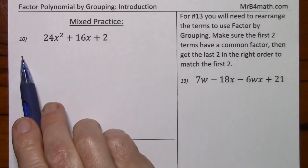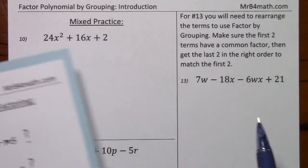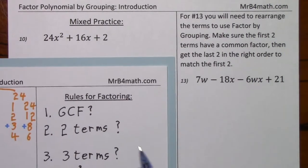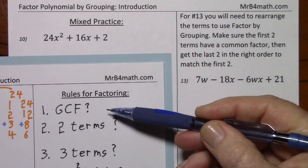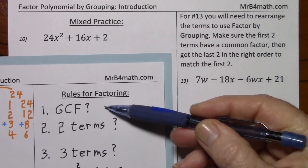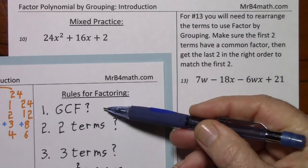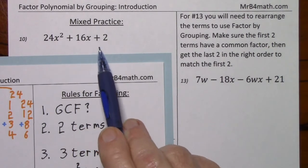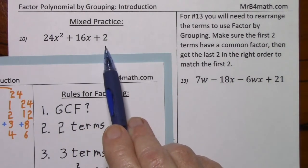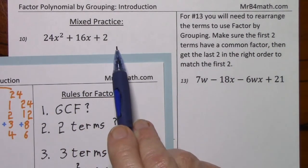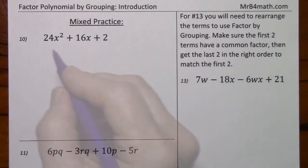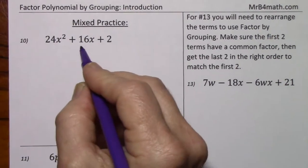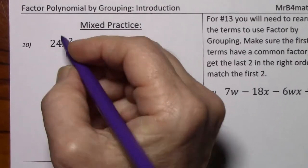Looking at number 10 and considering our rules for factoring, number one on the list is GCF. Do we have a greatest common factor? Yes, so we'll factor that out. We can divide 2 out of each term.